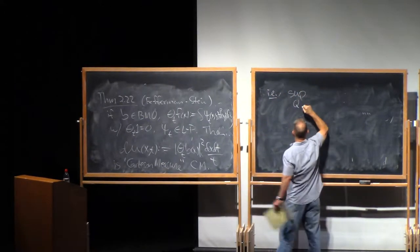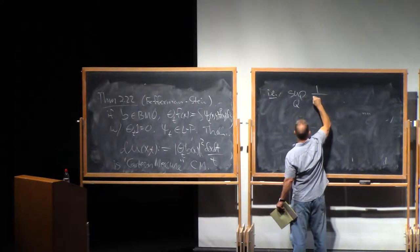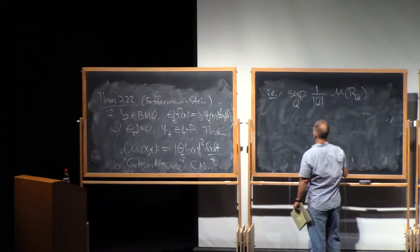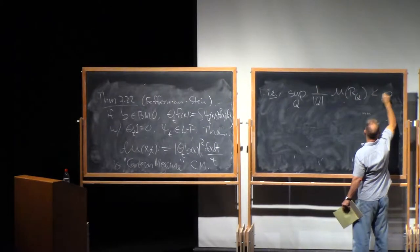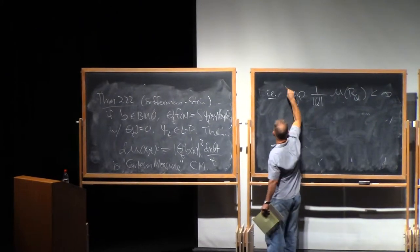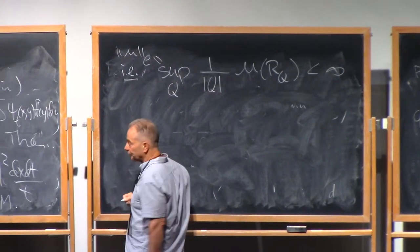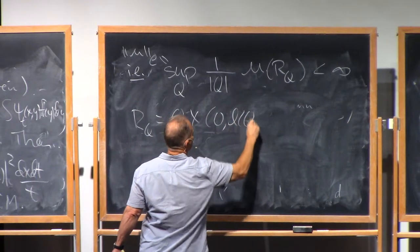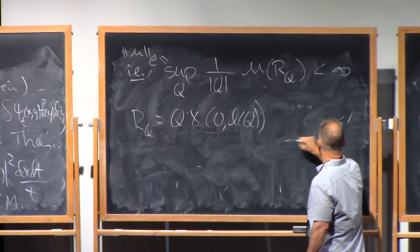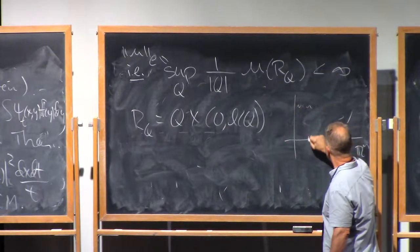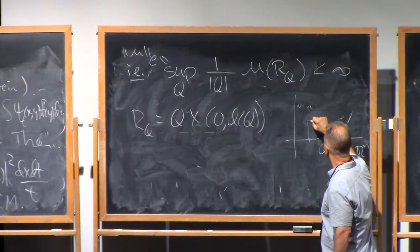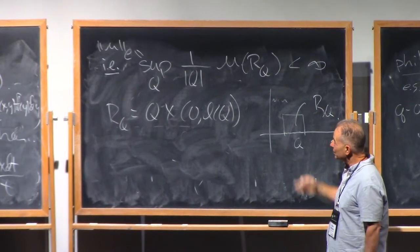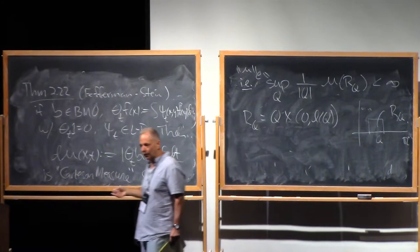That means that the sup over all Q, you could use balls just as well, of the expression one over Lebesgue measure of Q, this is Q contained in R^n, of the mu measure of R_Q, I'll tell you what R_Q is in a second, is finite. Let's give this expression a name, let's call this the Carleson norm of mu. And here, R_Q is just the Carleson box associated to Q.